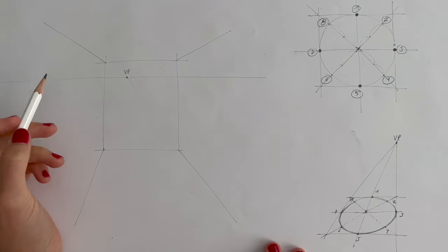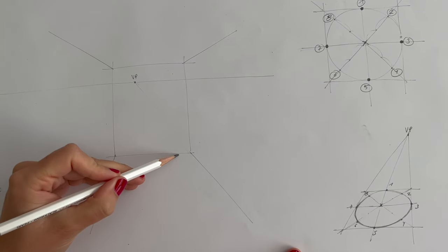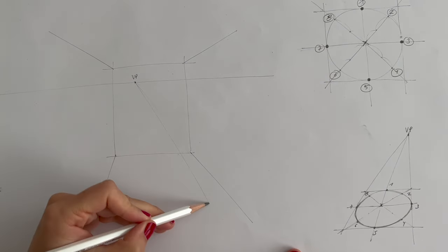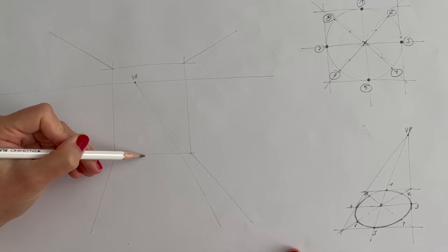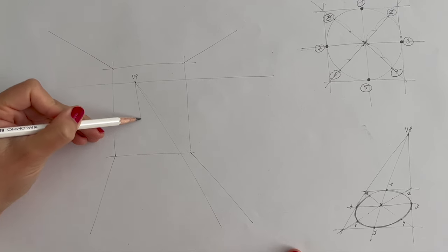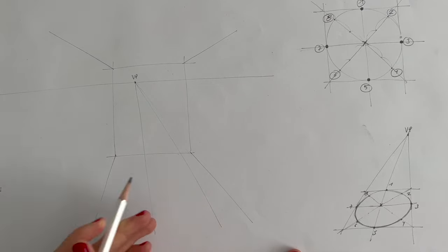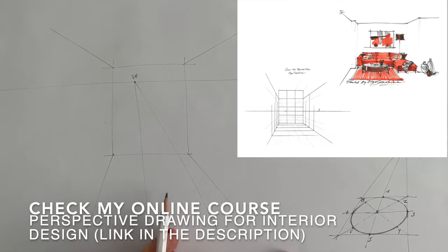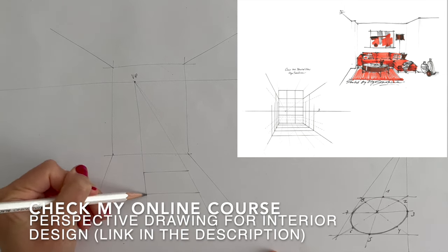Next, we draw two lines to indicate the basement of the cylinder on the floor of the room. Again, here we are drawing everything by eye. I give detailed grid and measurement in my online course on perspective drawing for interior design. So there you know exactly how to draw to scale, how to draw with exact dimensions.